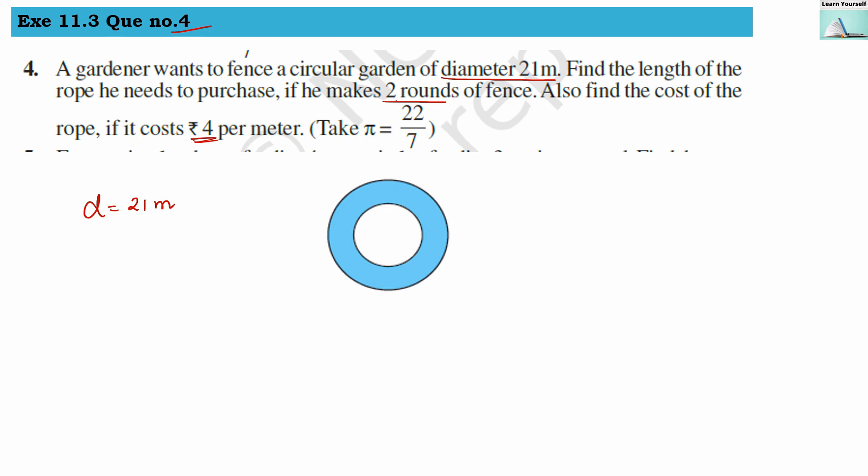First of all, let us understand he wants to make a fence. Whenever the fencing or boundary is there, we have to find out the circumference. Circumference will give us the length of this boundary or fence, so here first we have to find out circumference.